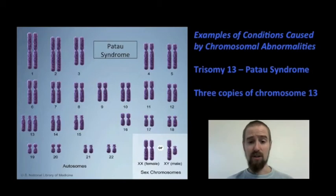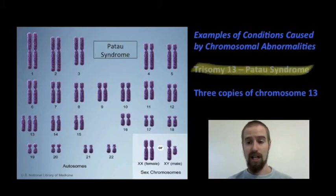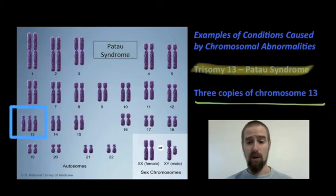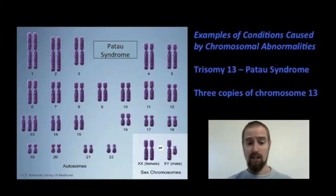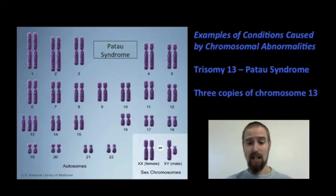Even more serious is Patau Syndrome, a condition caused by an extra copy of chromosome 13. This condition is usually fatal before birth, and 80% of children born with Patau Syndrome die in their first year of life, with living beyond 3 or 4 being extremely rare. Patau Syndrome causes a wide variety of complex organ defects in the heart, kidneys, and genital structures. Individuals may have extra fingers and toes, and may develop with only one eye socket. It is a very extreme condition, and no one with Patau Syndrome lives to reach adulthood.